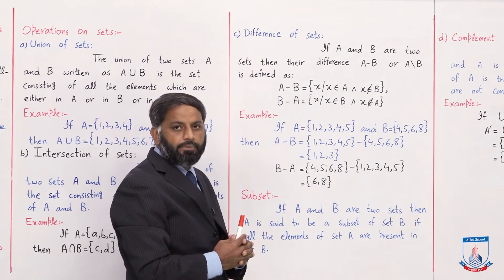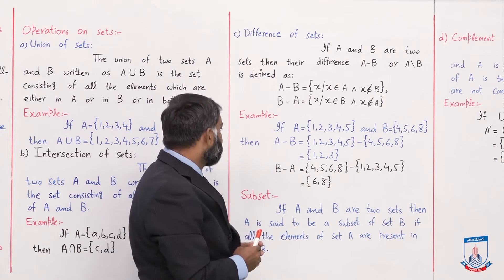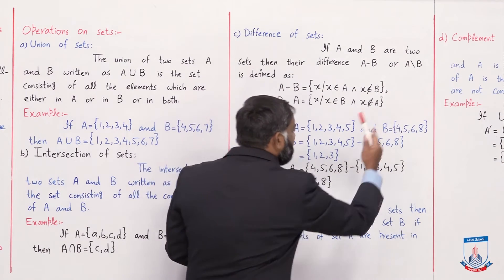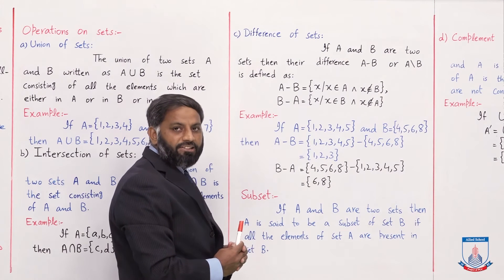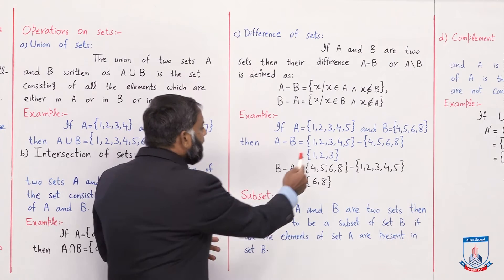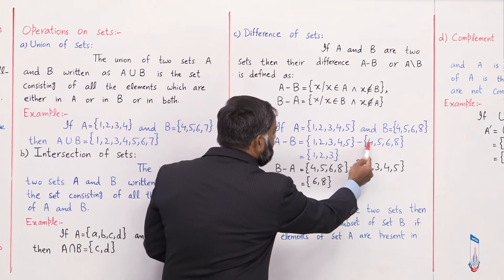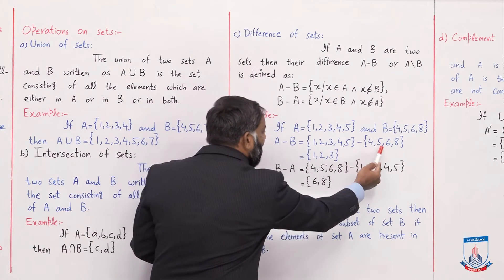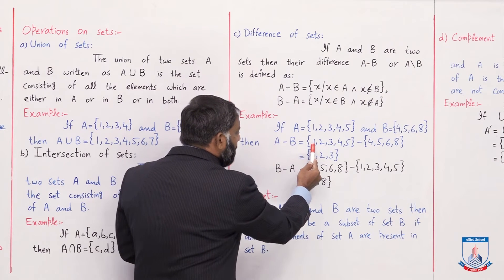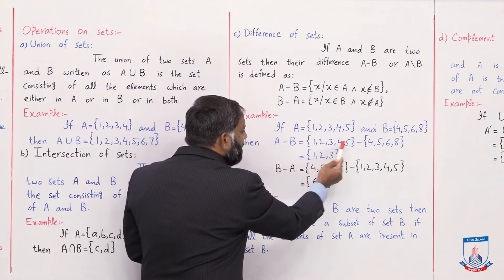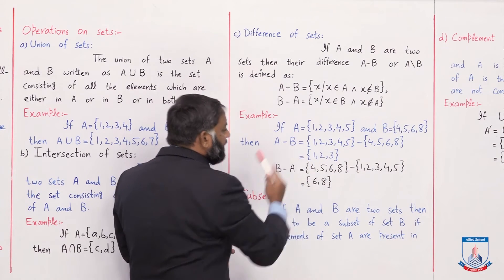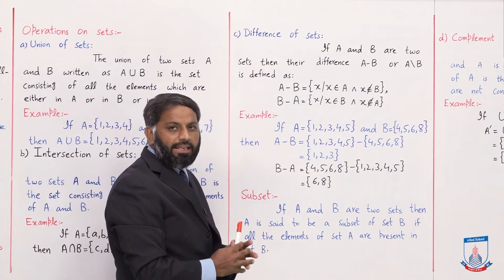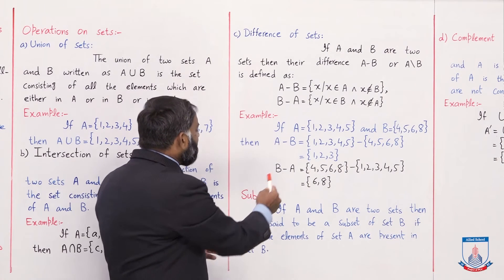Example: if A = {1, 2, 3, 4, 5} and B = {4, 5, 6, 8}, then A − B: set A کے وہ elements جو set B میں نہیں ہیں — 1 یہاں نہیں ہے تو 1 آجائے گا، 2 اور 3 بھی B میں نہیں ہیں تو وہ آجائیں گے۔ 4 اور 5 چونکہ set B میں بھی ہیں اس لیے A − B میں نہیں لکھے جائیں گے۔ تو A − B = {1, 2, 3}.